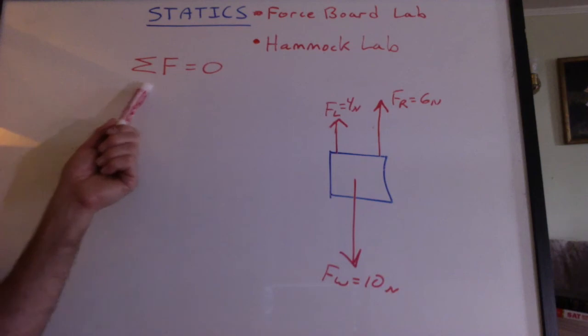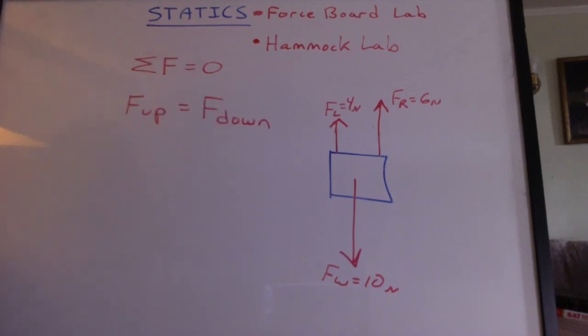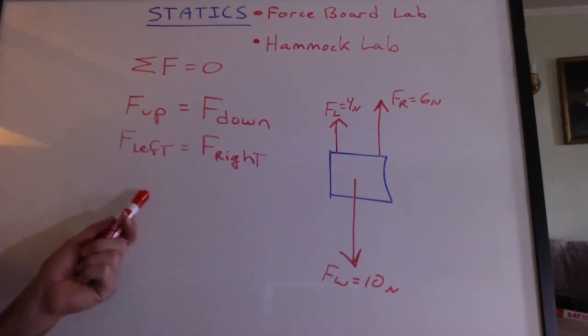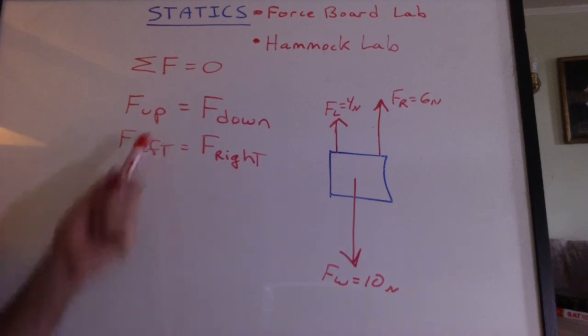So sometimes when we think of the sum of the forces equaling zero for a static situation, we can think of the components that are going up and down and say the forces up equal the forces down. And we can think of the x components and say that the forces going to the left would have to equal the forces going to the right. This is a useful way of thinking about these problems sometimes.